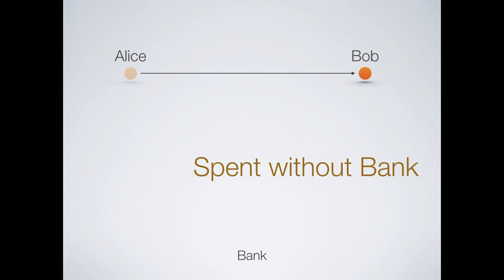The idea is that if this is going to be a cash-like system, Alice gives it to Bob directly without involving the bank — she doesn't have to say 'hey bank, send the money to Bob,' she just gives it directly. But now we have a problem: if Alice has this digital blob, she can copy and paste it many times. She can make 10 copies, give one to Bob, one to Carol, one to David. These people all think they're getting one Canadian dollar, but it turns out they're just getting a copy. The first person to deposit it back to the bank gets the dollar; all the others are out of luck.